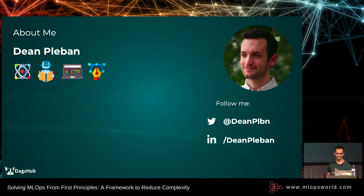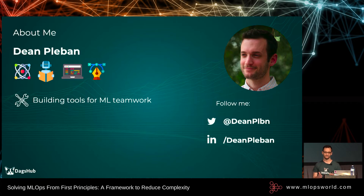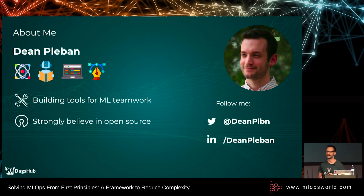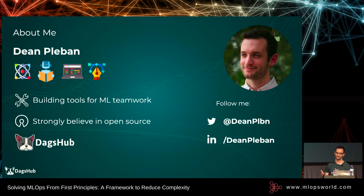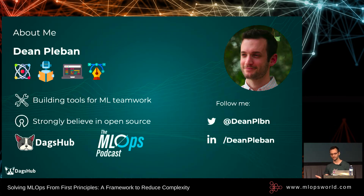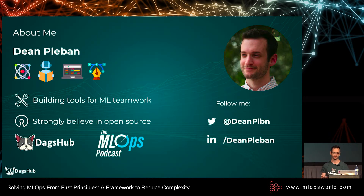For the purpose of this talk, I'll say that I'm really passionate about building tools that help machine learning teams work together. I'm a strong believer in open source and the role it plays in machine learning. I'm the co-founder of DagsHub, which is building the GitHub of machine learning — we take popular open source tools and combine them into a platform that makes them easier to use for teams. I'm also the host of the MLOps podcast. Part of what we do is evaluate open source tools to decide which ones we want to integrate, so we've really gone through this process many, many times.